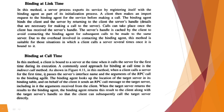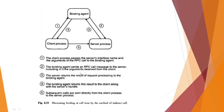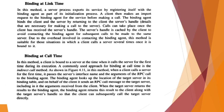In binding at call time, the client is bound to a server at the time it calls the server for the first time during execution. A commonly used approach is the indirect call method, where the client process passes the server's interface name and arguments to the binding agent. The binding agent sends an RPC call message to the server, returns the result along with the server handle to the client, and subsequent calls are sent directly.